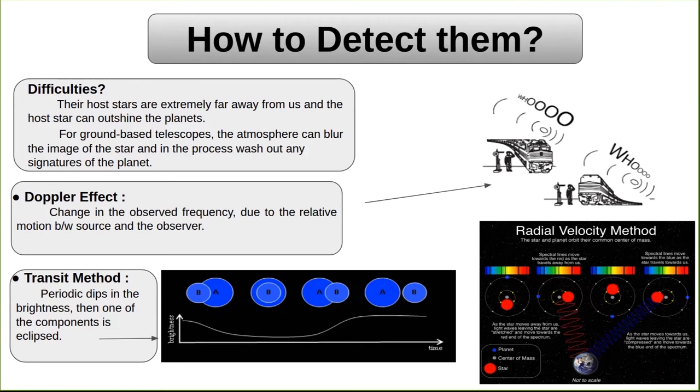Another method is transit method. We know, when the moon comes in between earth and the sun, it blocks some of the light coming from the sun to earth. In a similar way, when we are observing a star and its planet come in between telescope and the star, the light received from the star will decrease.